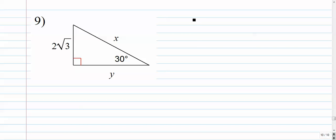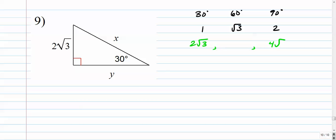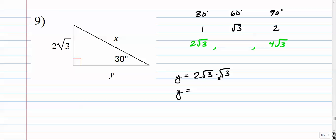Number 9: 30-60-90, ratio 1, radical 3, 2. The 30-degree short leg is 2 radical 3. The hypotenuse is twice that — I multiply only the number out in front, not the radicand — so the hypotenuse is 4 radical 3. The longer leg y equals the short leg times radical 3: 2 radical 3 times radical 3 equals 2 times the square root of 9. The square root of 9 is 3, so that's 6. Y equals 6.